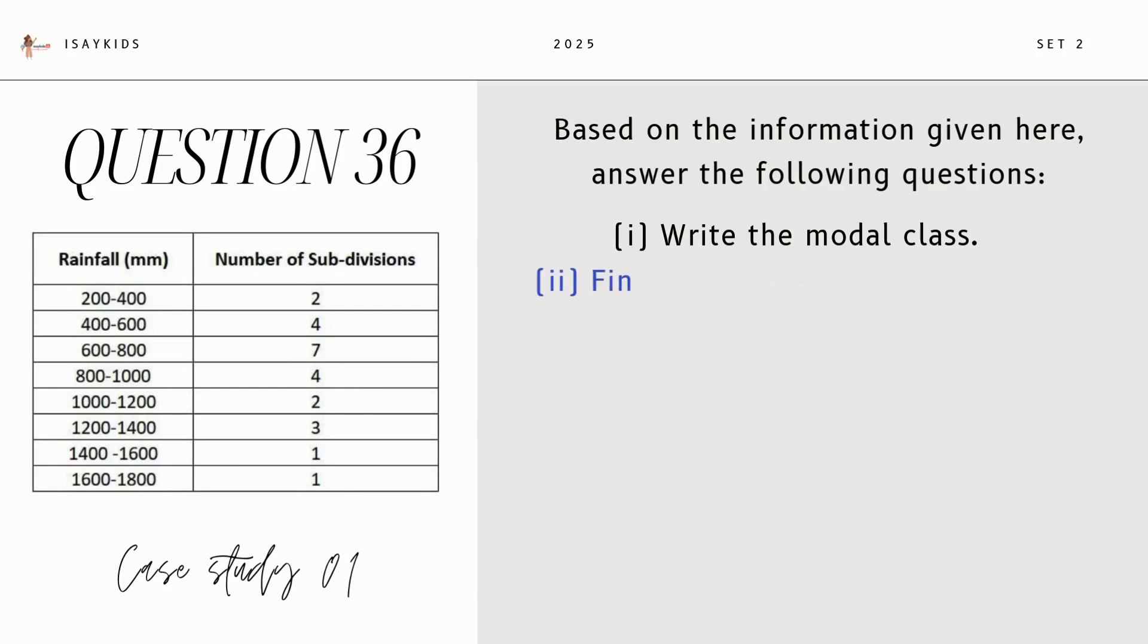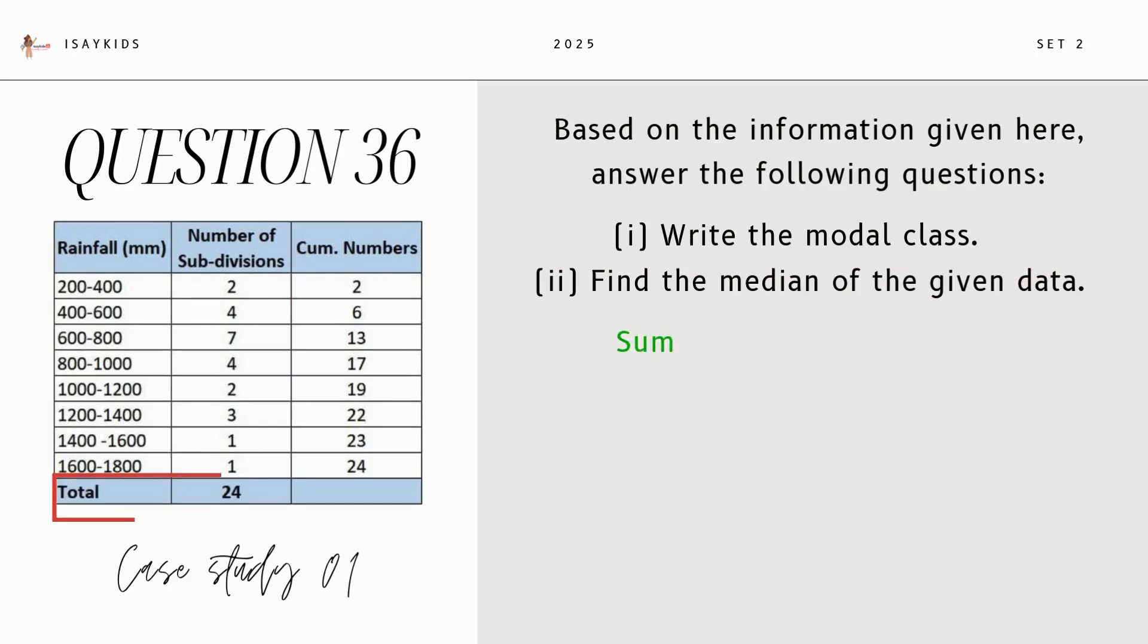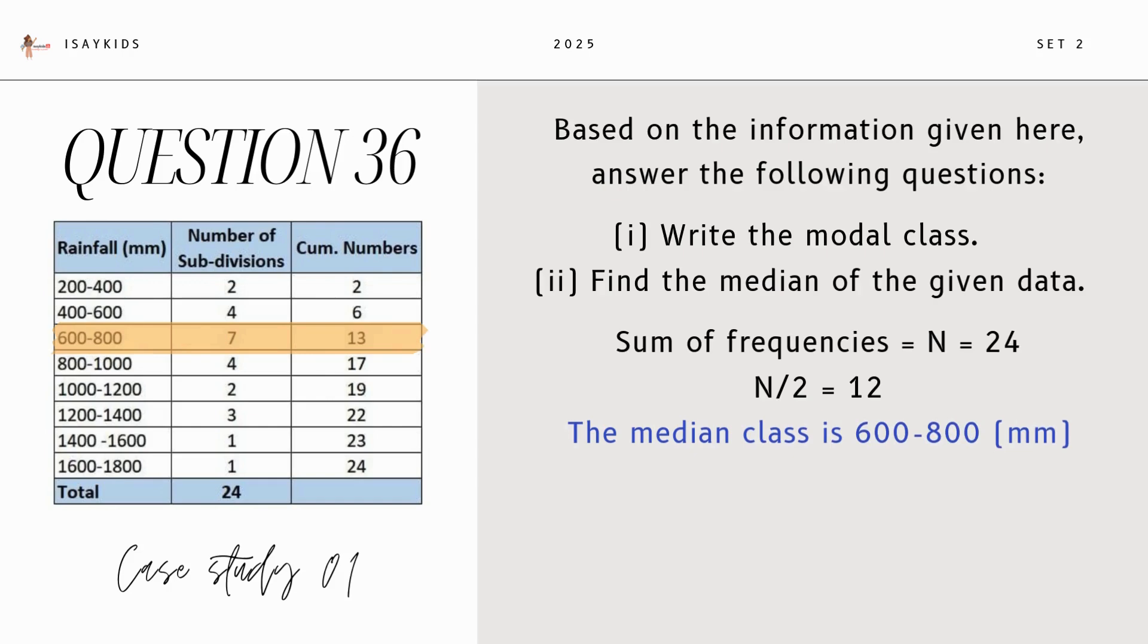Find the median of the given data. For finding the median, we first need the cumulative frequency of the given data. We found out that sum of frequencies is 24. So, N by 2 would be 12. Now 12 would lie in the class 600 to 800. Hence, median class is 600 to 800.